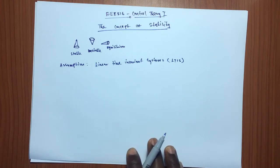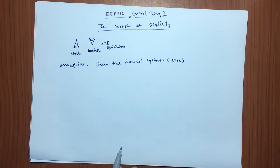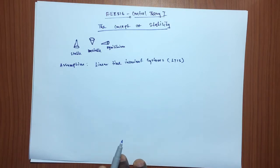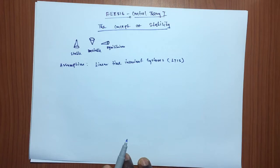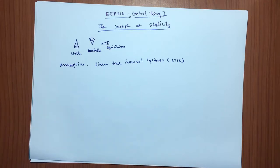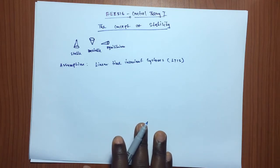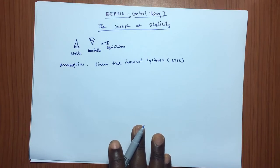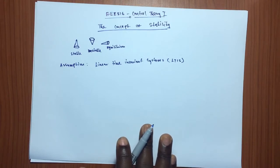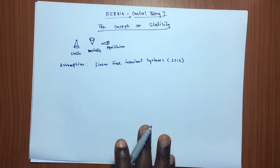Stability conditions for linear time invariant systems: one, the output is bounded when the system is excited by a bounded input. Two, in the absence of input, the output turns towards zero — the equilibrium state of the system irrespective of initial conditions. This is known as asymptotic stability. Stability of a system refers to its quality of being steady and not changing. In control engineering, almost every working system is designed to be stable, as an unstable system cannot perform the required control tasks satisfactorily.